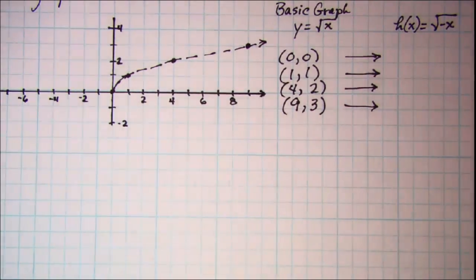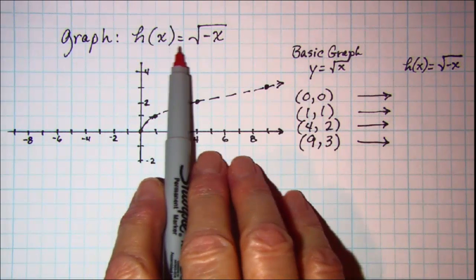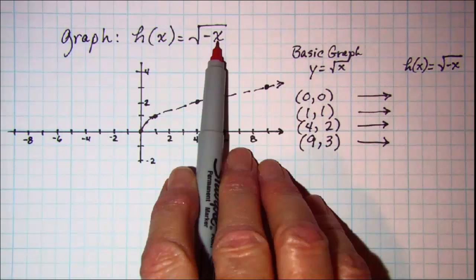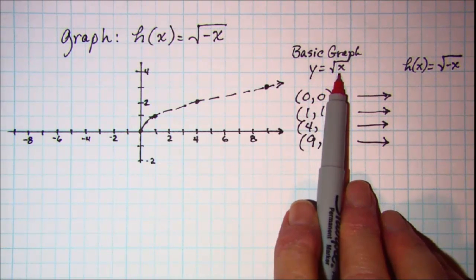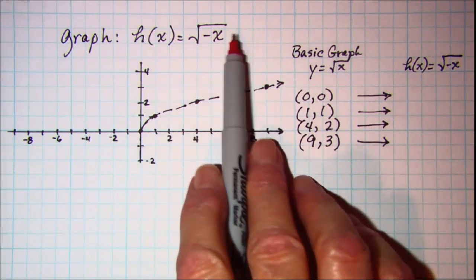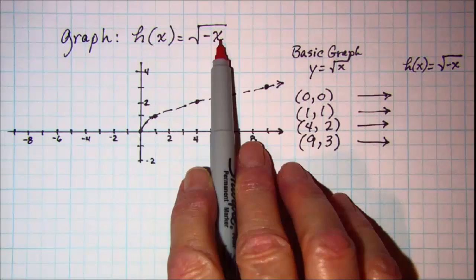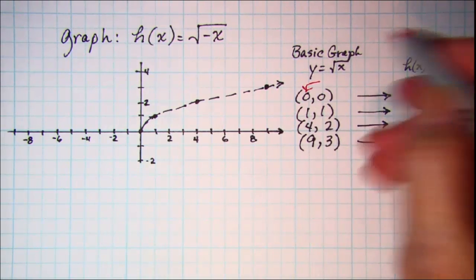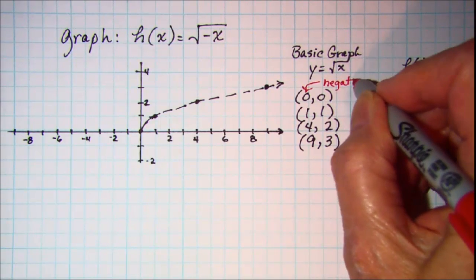We get another one and this one we're asked to graph h of x equals the square root of negative x. Now on this one our basic graph is the square root graph y equals square root of x, and you'll notice that this time we're negating the x. So to get points on our h graph we want to negate x.